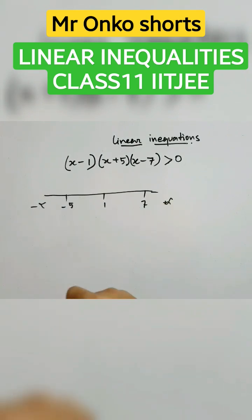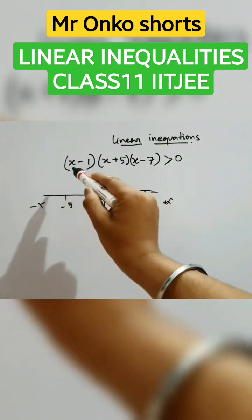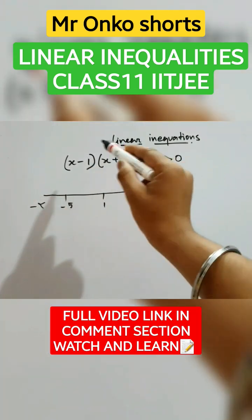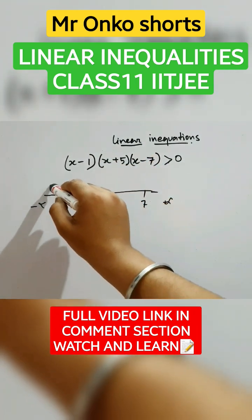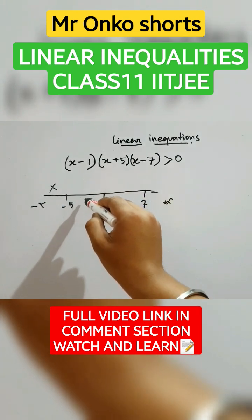So from minus infinity to minus 5, let's take a point that is minus 6. Now check it here. Minus 6 will provide minus, minus, minus. So multiplication of 3 minuses will be negative, so this zone is rejected. Now here, in this case, we have to choose 0 in between them.